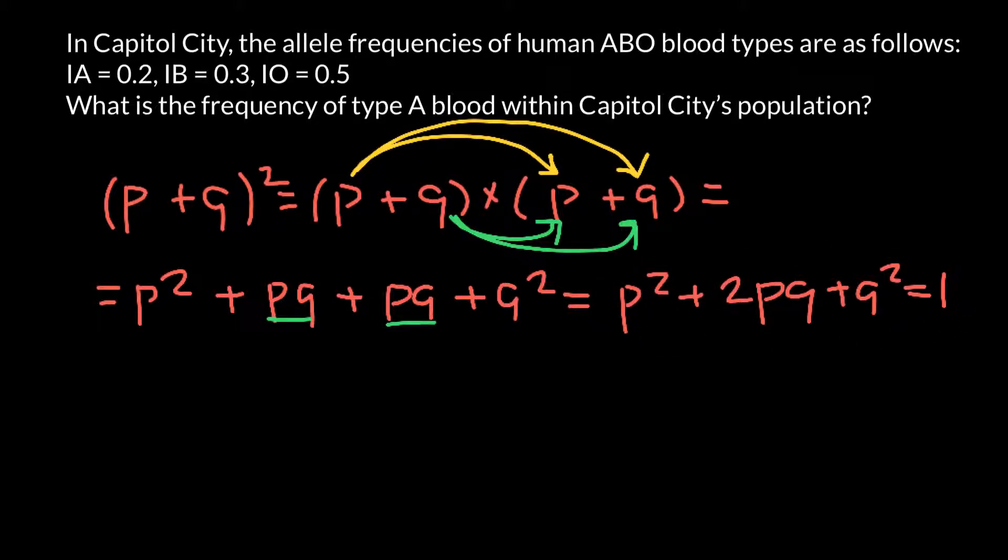P squared stands for, if you're used to dominant and recessive alleles - P stands for the dominant allele and Q for the recessive allele - the homozygous dominant genotype frequency. 2PQ is the heterozygous genotype frequency, and Q squared stands for the homozygous recessive genotype. Now you understand how to solve for two alleles.